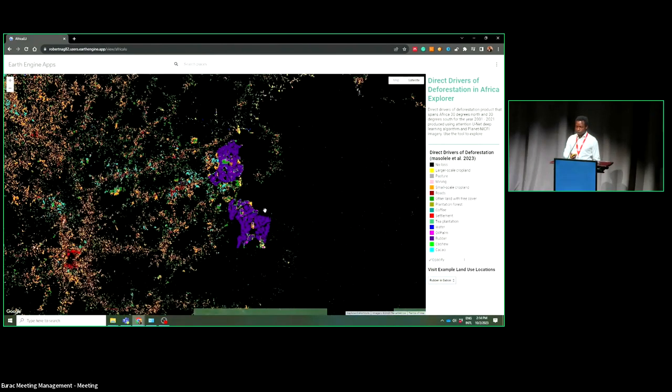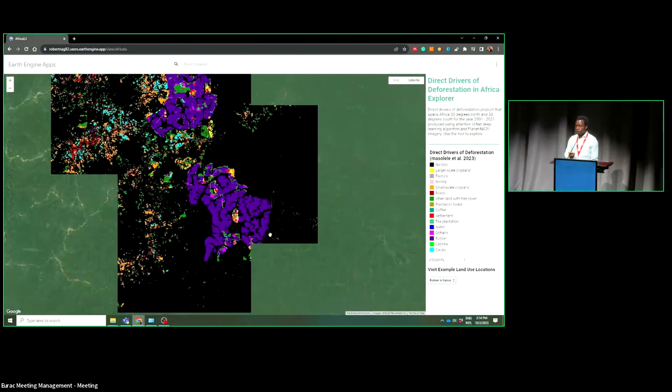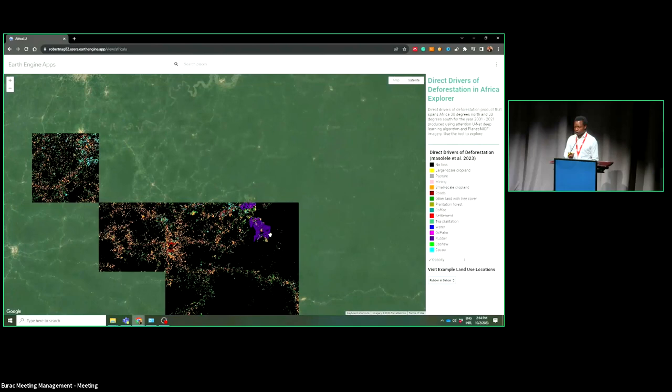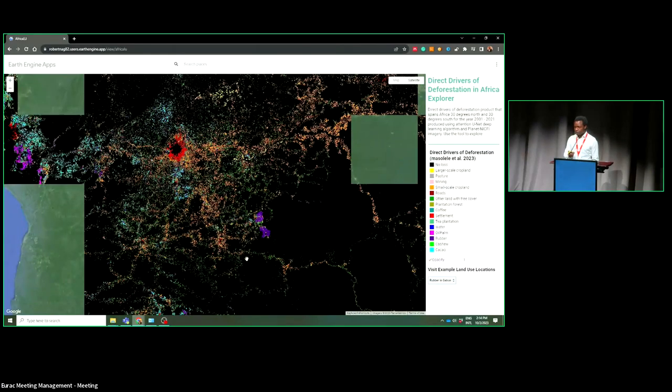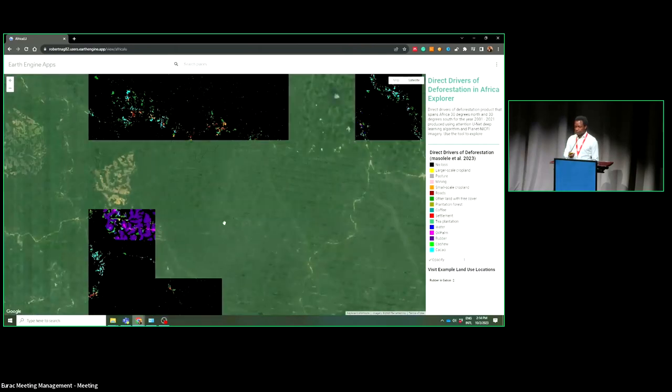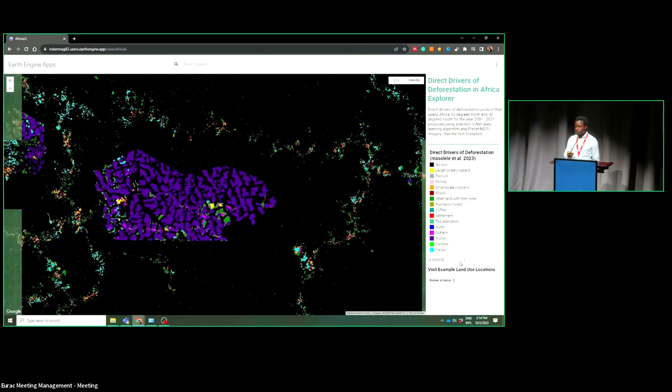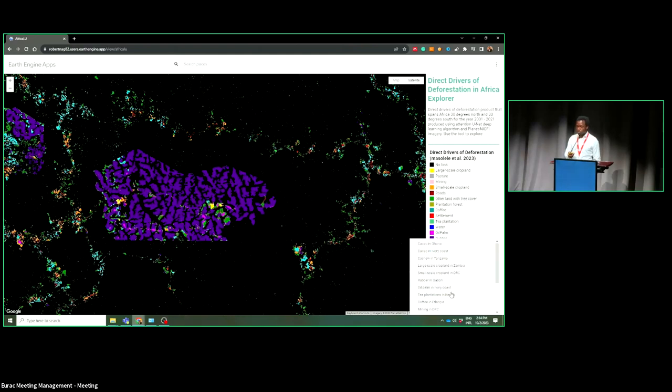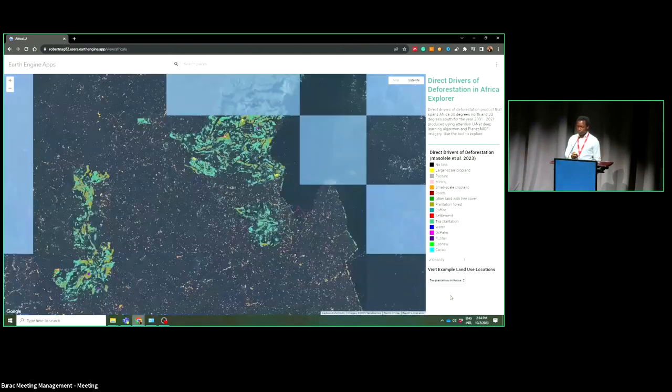We also identify rubber. For example, if you go to Cameroon and Gabon, you can see that there are very big rubber plantations, which has been established recently in the middle of the Congo Basin.